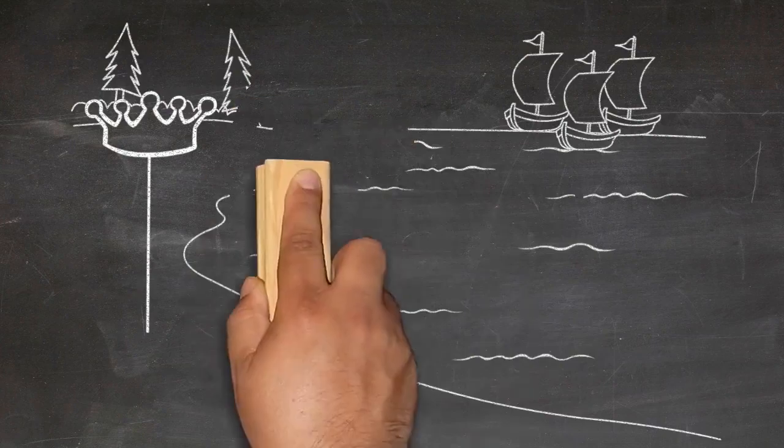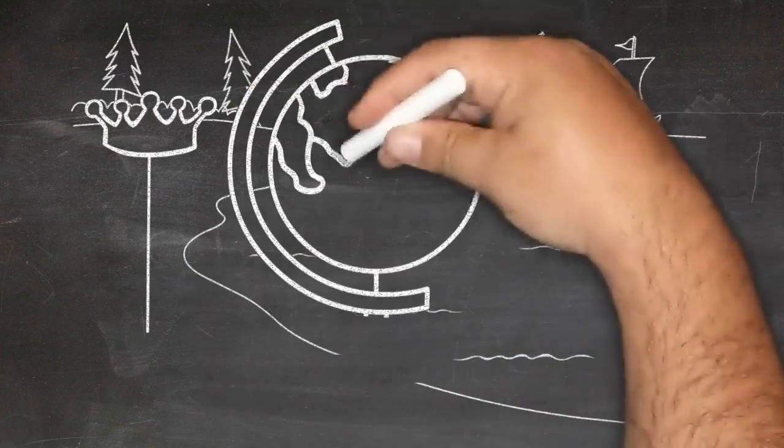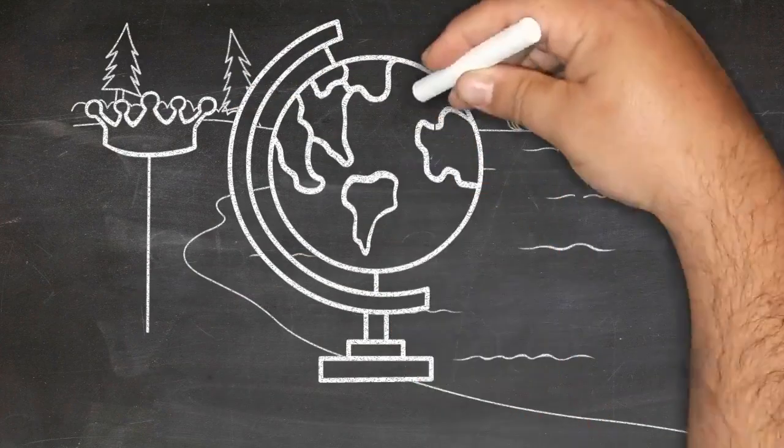At that time, the United States did not exist. Virginia was part of the British Empire Builders' plan to dominate the world.